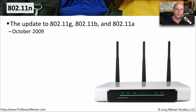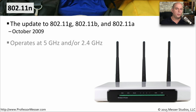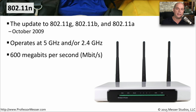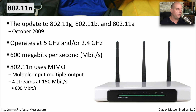802.11n was released in October 2009 and effectively updated everything before it. This version operated at both 5 gigahertz and/or 2.4 gigahertz, depending on what hardware you purchased. It also increased speeds up to 600 megabits per second, a significant increase over previous versions. 802.11n achieved these speeds using MIMO — multiple input, multiple output — using four separate streams, each running at 150 megabits per second, for a total theoretical throughput of 600 megabits per second.